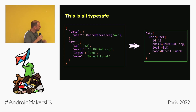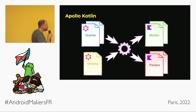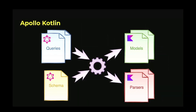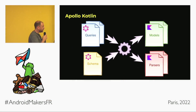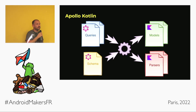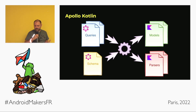Apollo Kotlin is a GraphQL client for Android and any project using Kotlin. The way it works is that it generates code — it takes your queries and all the type information in the schema and generates equivalent models plus parsers that instantiate these models and fill them with data from the JSON payloads.